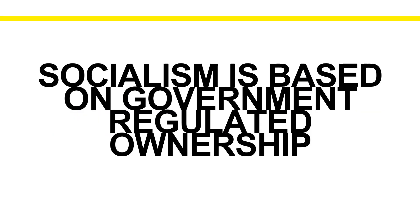Socialism, however, is based on government regulated ownership. In capitalism it was private ownership — Jeff owns his own company and decides what the profits are going towards. In socialism, it is different because there is less focus on the individual person and more focus on the collective group, and that group is known as a society. It is made up of everyone, regardless of their age, their gender, their class, their income. Everybody is part of this group and they are treated differently depending on their initial wealth.